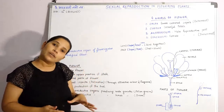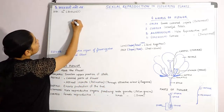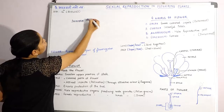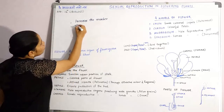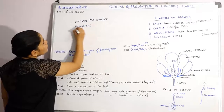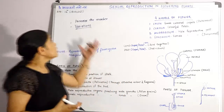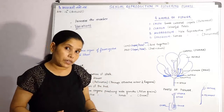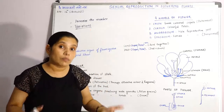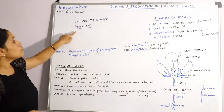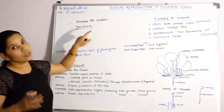Sexual reproduction is very important because it increases the number of individuals. Next, it produces variations. Variations are important characters that transfer from one generation to the next generation. These features help organisms to cope up with the changing environment. If sexual reproduction did not happen, the organism would not survive, because it is variation that makes the organism adapt to its environment. This process is only possible through sexual reproduction.